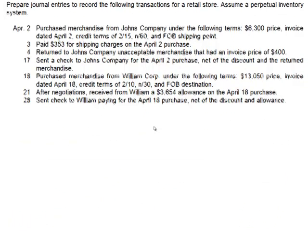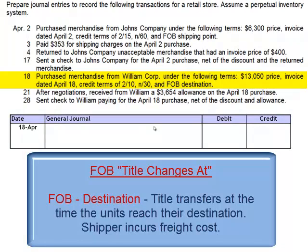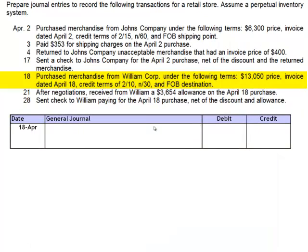So let's try this process again with William Corp. On April 18th, purchase merchandise from William Corp under the following terms: $13,050 price, invoice dated April 18th, credit terms of 2/10 net 30, and FOB destination. The cost of the inventory is initially $13,050. Credit terms of 2/10 net 30 indicate a 2% discount if we pay within 10 days; otherwise, the entire amount is due within 30 days. FOB destination means title changed at the destination when it reached our door, so William Corp owned the units in transit and is responsible for the freight. The journal entry on April 18th is a debit to merchandise inventory and a credit to accounts payable.